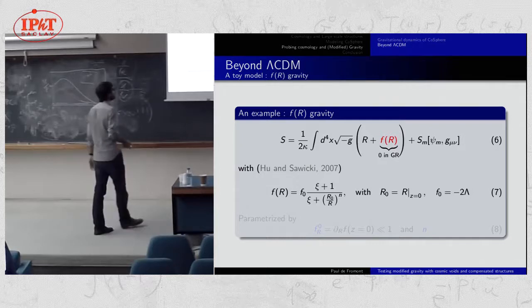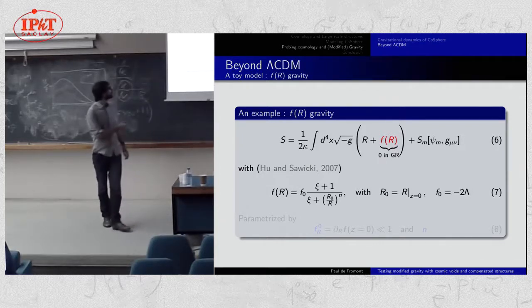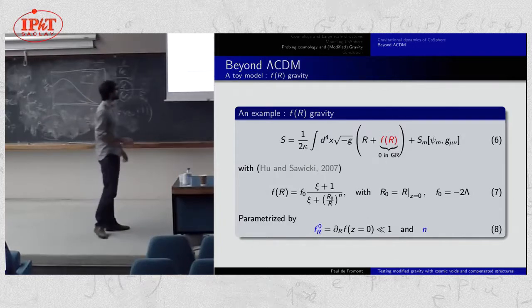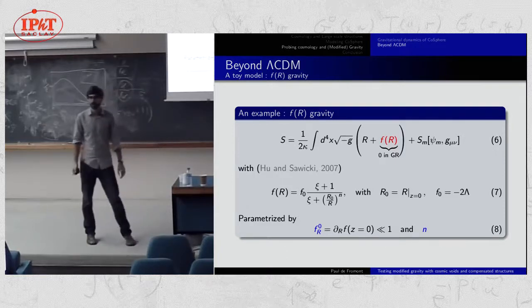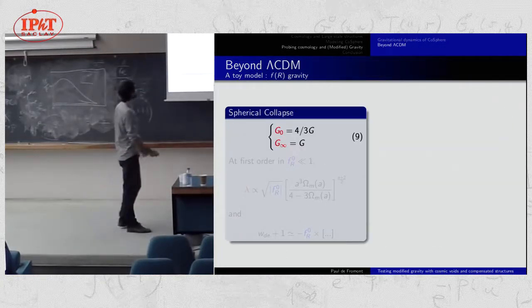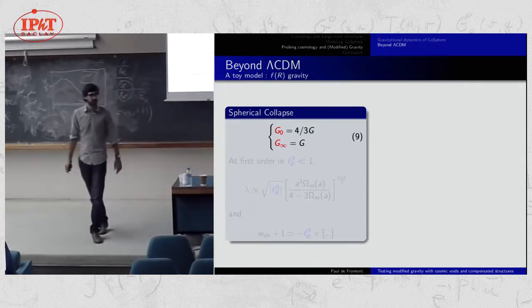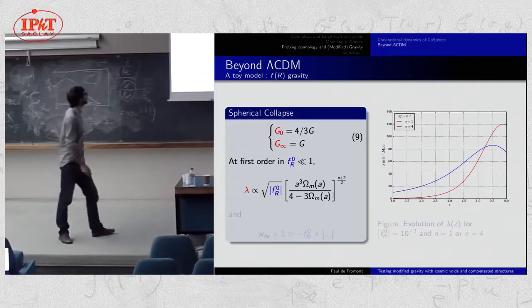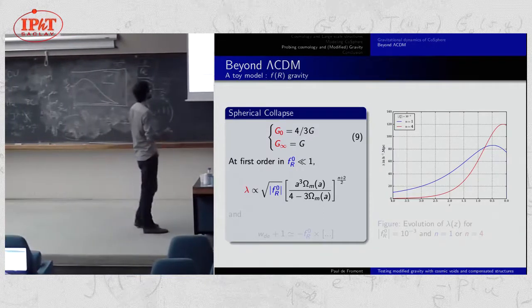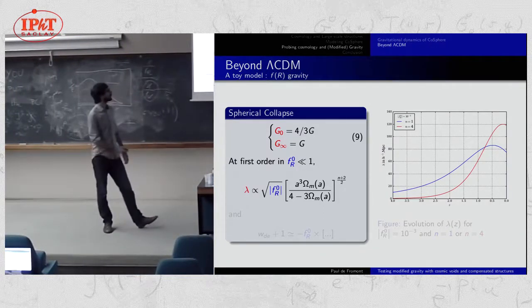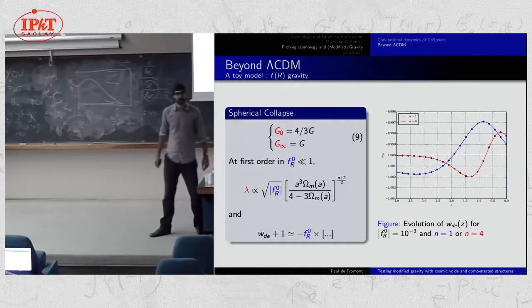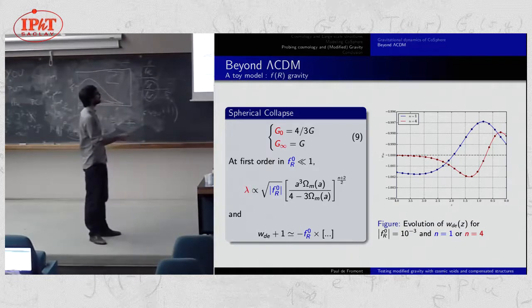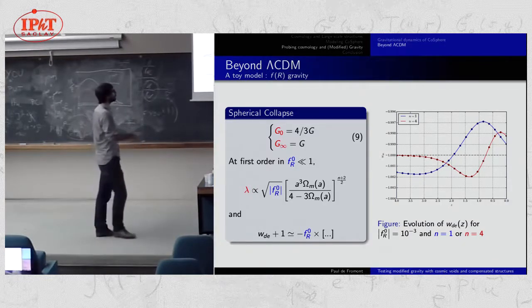Let's take a simple toy model: f(R) gravity with a well-used parametrization, with two scalars — f_R0, expected to be much less than one, and n. In this model, g₀ is approximately 4/3 G, whereas on very large scales we recover standard GR. At first order in f_R0, you can compute analytically the Compton wavelength, which grows in comoving coordinates, peaks, then decreases. You can also get the evolution of W, the effective equation of state parameter, which oscillates around minus one with very small deviations.